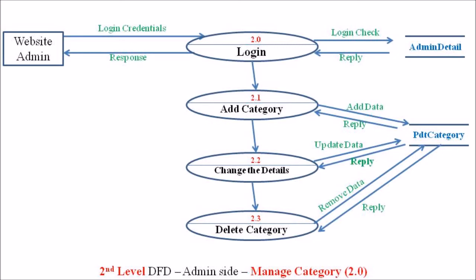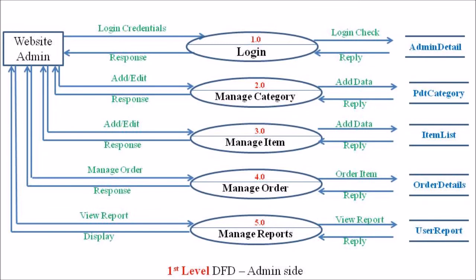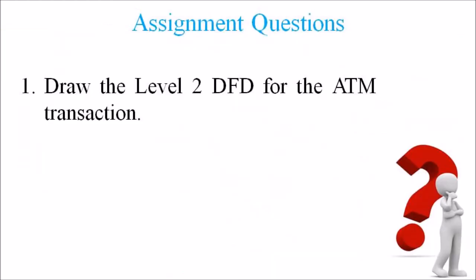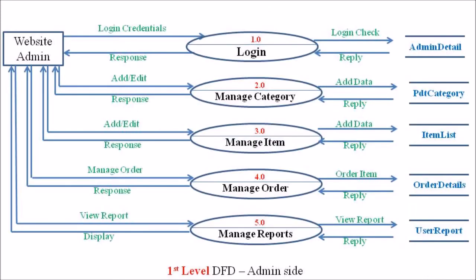In this lecture, we discussed the level 2 DFDs for the login process and the manage category process. Hope you have understood this lecture. Kindly go through the assignment question: draw the level 2 DFD for ATM transaction. In the upcoming lecture, we will discuss the level 2 DFD for manage item, manage order, and manage report of the admin side.